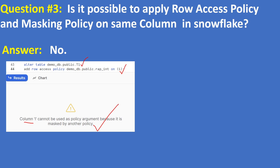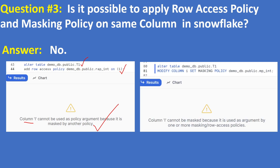Conversely, if you already applied a row access policy and then try to apply a masking policy with ALTER TABLE, MODIFY COLUMN I, SET MASKING POLICY, you get: column I cannot be masked because it is used as an argument by one or more masking or row access policies. So you cannot apply both simultaneously.